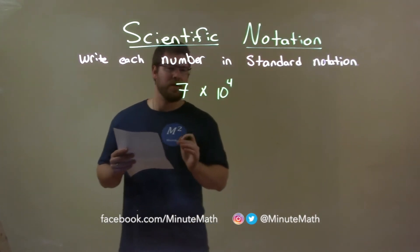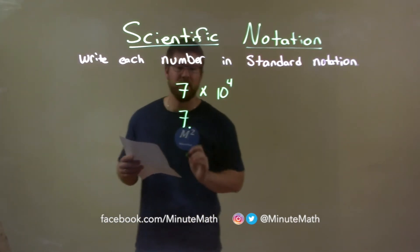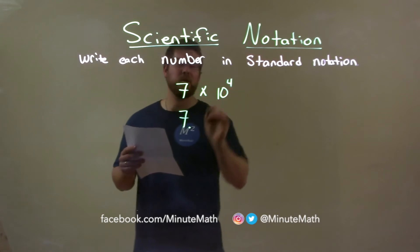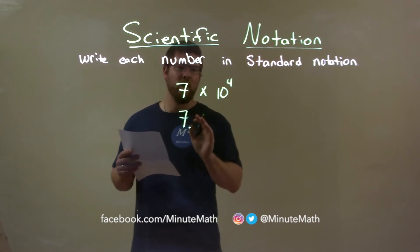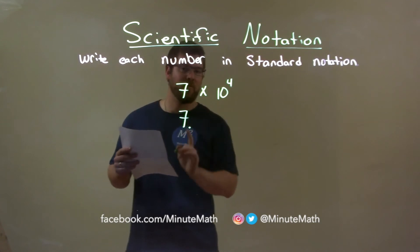Well, what we want to do here, we take 7 and we know 7 has a decimal place right here to the right of it. Now, we multiply 10 to the fourth power, that means we're going to add four zeros to this. So this decimal place is going to move four spots to the right.